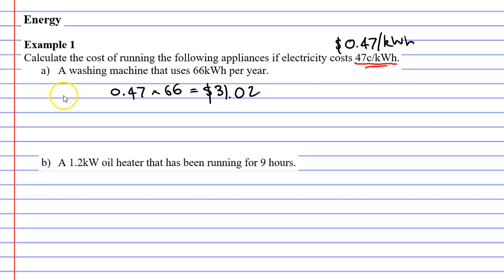Now moving on to question B. This time, a 1.2 kilowatt oil heater has been running for 9 hours. We're going to calculate this cost. So what we're going to do is multiply the power rating of the oil heater by the number of hours that we used it for. So 1.2 times 9.